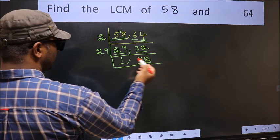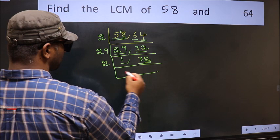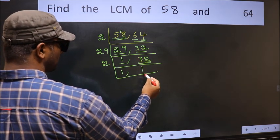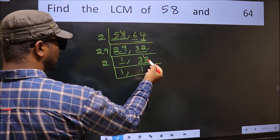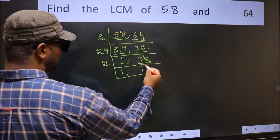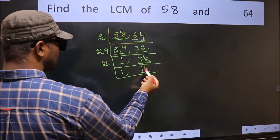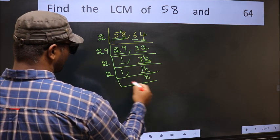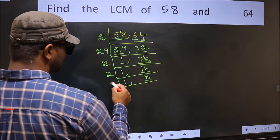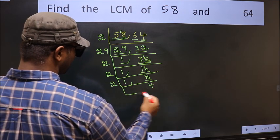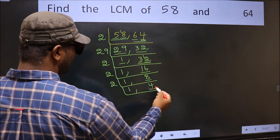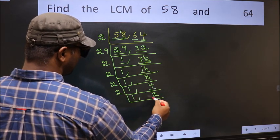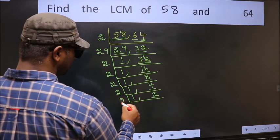Last digit of 32 is 2, so take 2. First number is 3; a number close to 3 in the 2 table is 2 times 1 is 2. 3 minus 2 is 1, carried forward gives 12. When do we get 12 in the 2 table? 2 times 6 is 12. Now we have 16: 2 times 8 is 16. Now we have 8: 2 times 4 is 8. Now we have 4: 2 times 2 is 4. Now we have 2, which is a prime number, so 2 times 1 is 2.